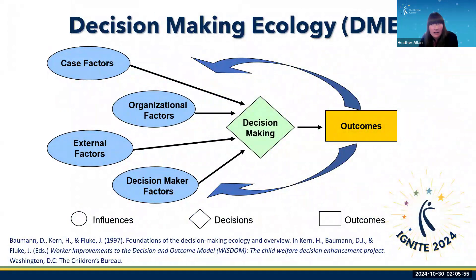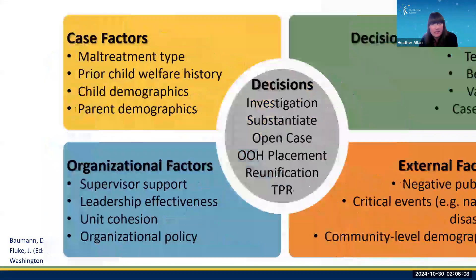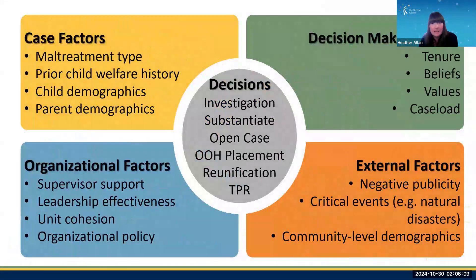Enter the Decision-Making Ecology. The DME is a framework for understanding the complexity of decision-making in child welfare. The DME posits that there are four factor domains that feed into any child welfare decision: case, organizational, external, and decision-maker. Here is a sampling of some of the factors within each domain that can be explored to understand variation across child welfare decisions.